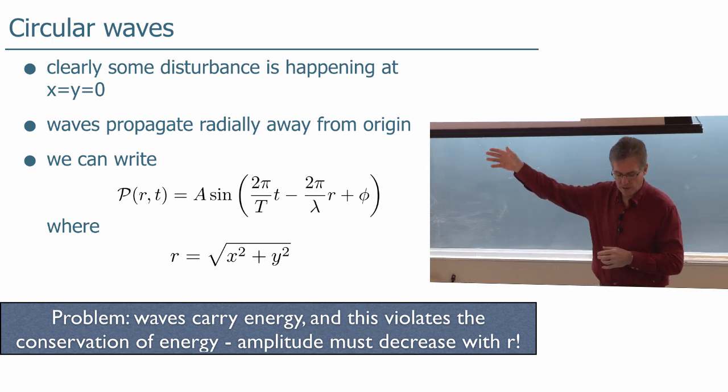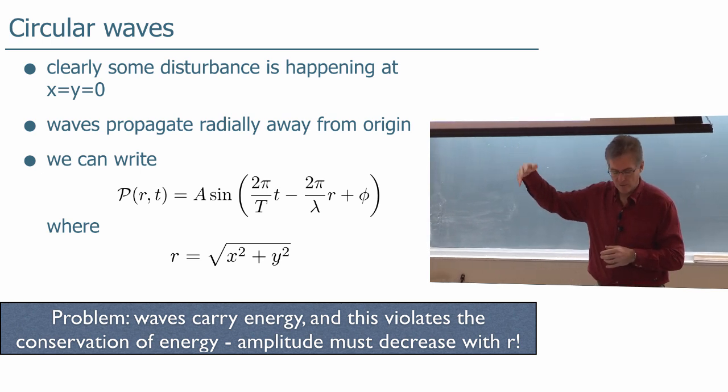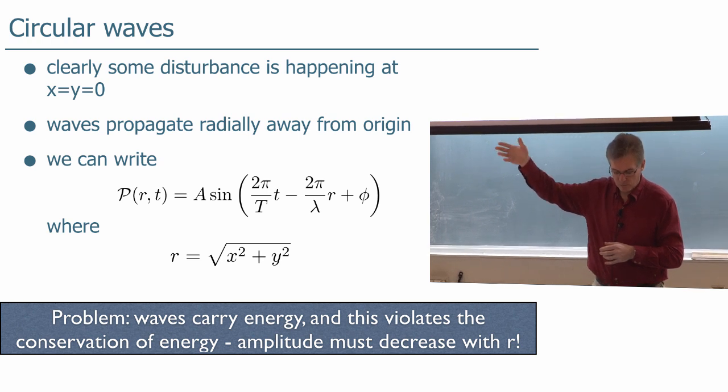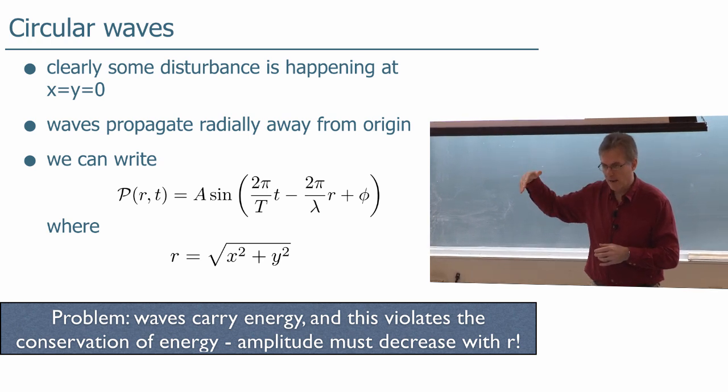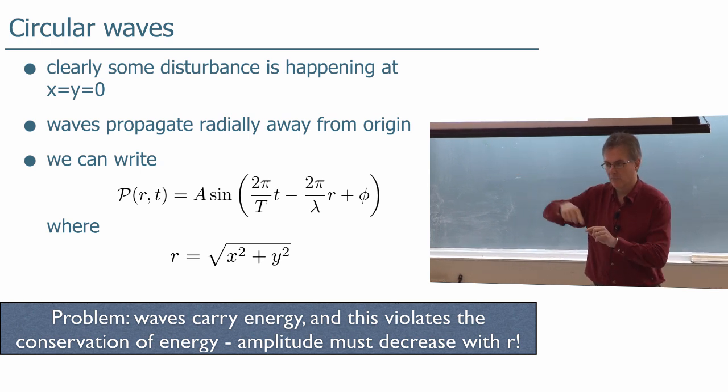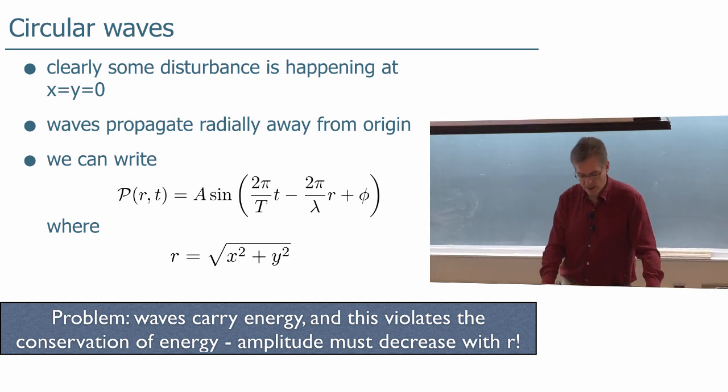A times sine 2 pi t over the period minus 2 pi r over lambda rather than x. And r now is the radius from the origin, square root of x squared plus y squared plus phi. That works, right?